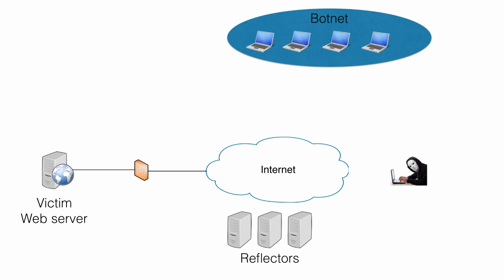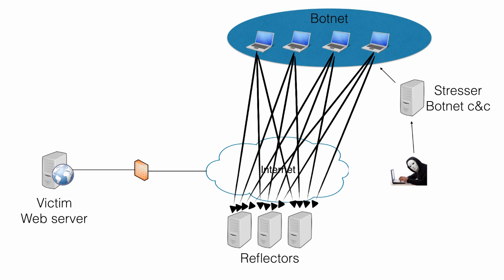In the DDoS scenario, the botnet command server is called a stressor or booter, delivering DDoS attacks as a service on the internet. Anyone with a credit card can pay a few dollars to the person in charge of the stressor, and this will deliver a DDoS attack against the target of choice. So in a typical DDoS attack, EvilBob visits a webpage delivering stressor services, enters his credit card number, and points out the address of the target he wants to take down. Depending on how much he pays, the stressor will deliver an attack at a certain bandwidth and duration. A normal price can be 30 minutes of attack at a rate of 1.5 gigabits per second for $50.